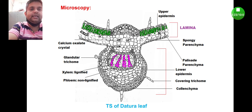And at the last you will find the lower epidermis. These are certain important characteristic features you will find in the lamina part. Moreover, inside the spongy parenchyma you can find the presence of calcium oxalate crystals.